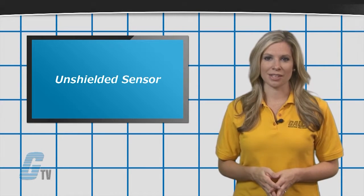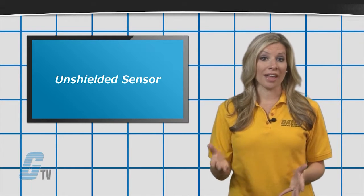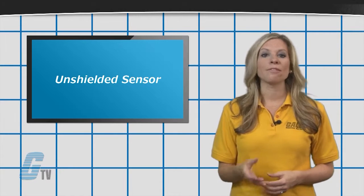The unshielded proximity sensors allow for greater sensing distances, but due to the nature of how they operate, they cannot be flush mounted.